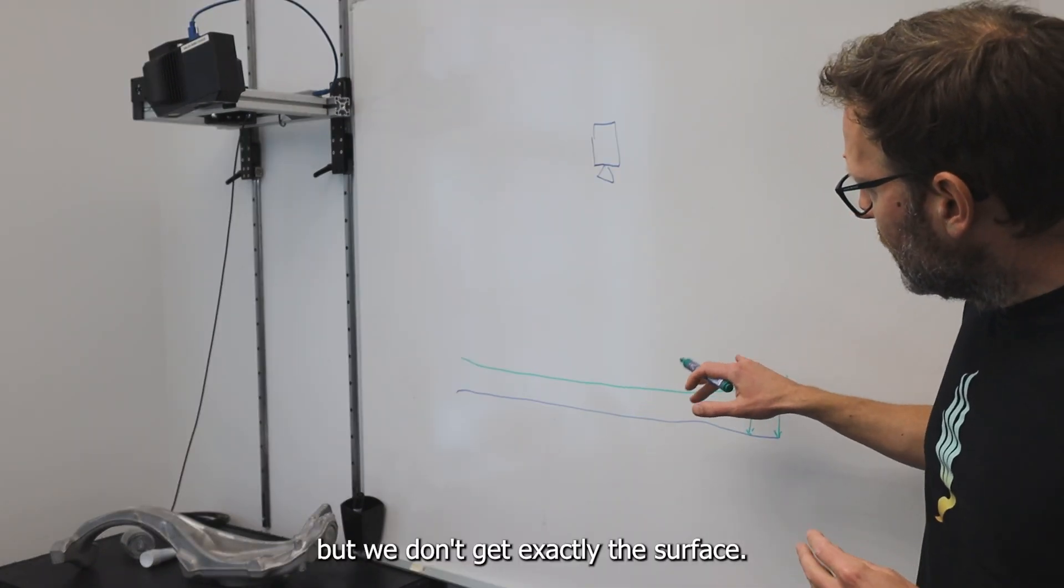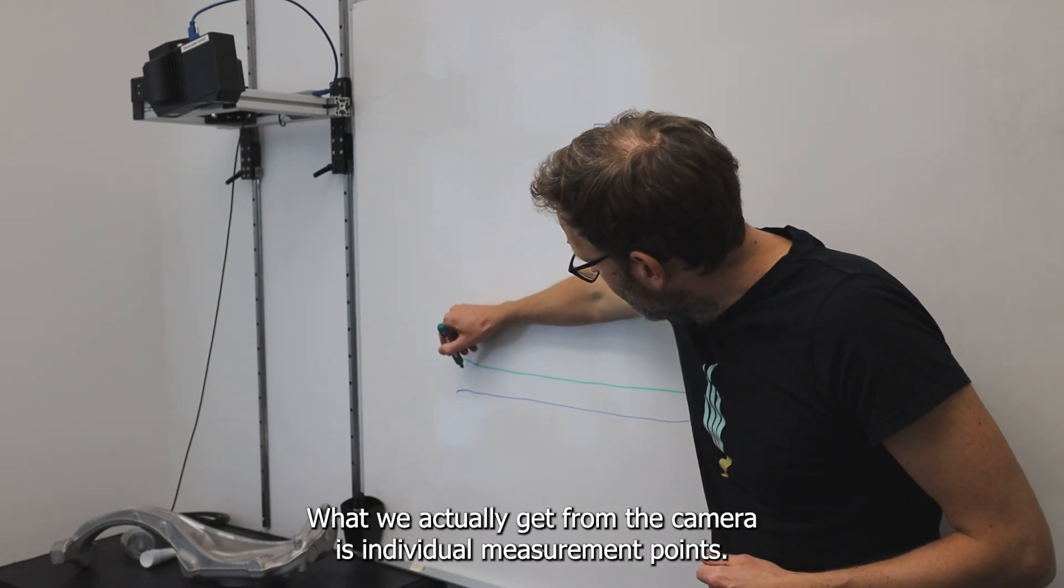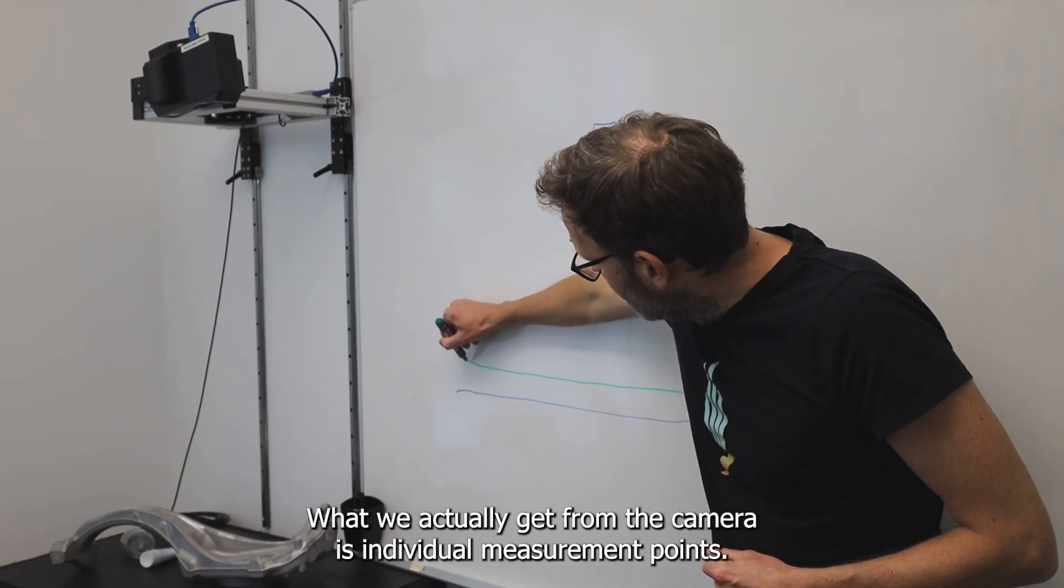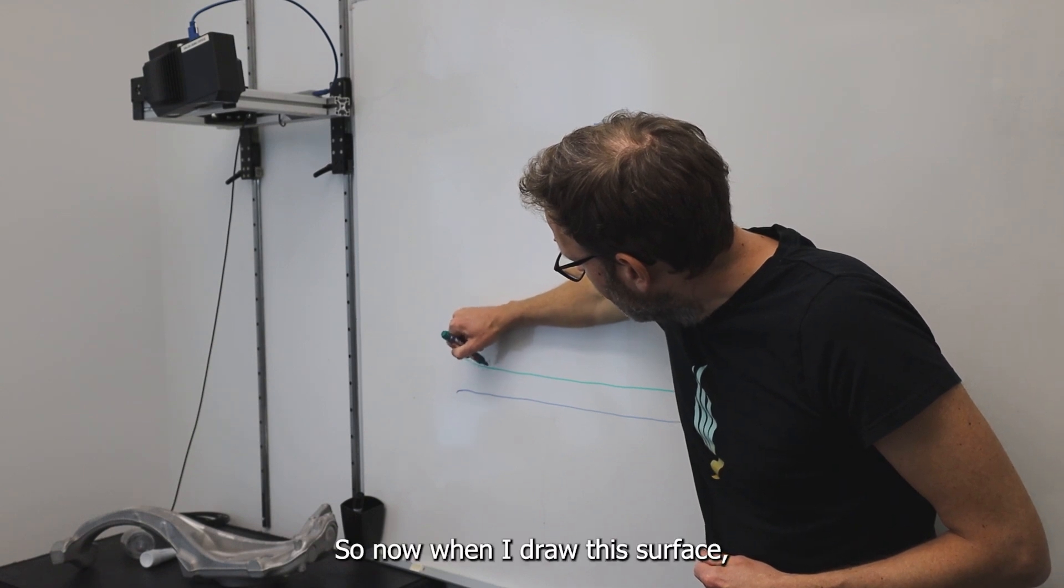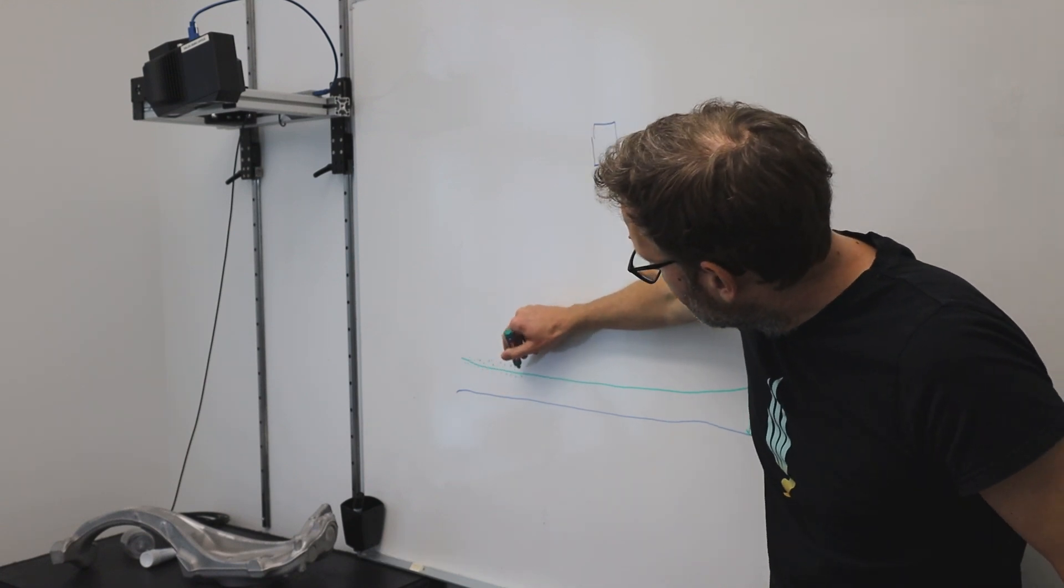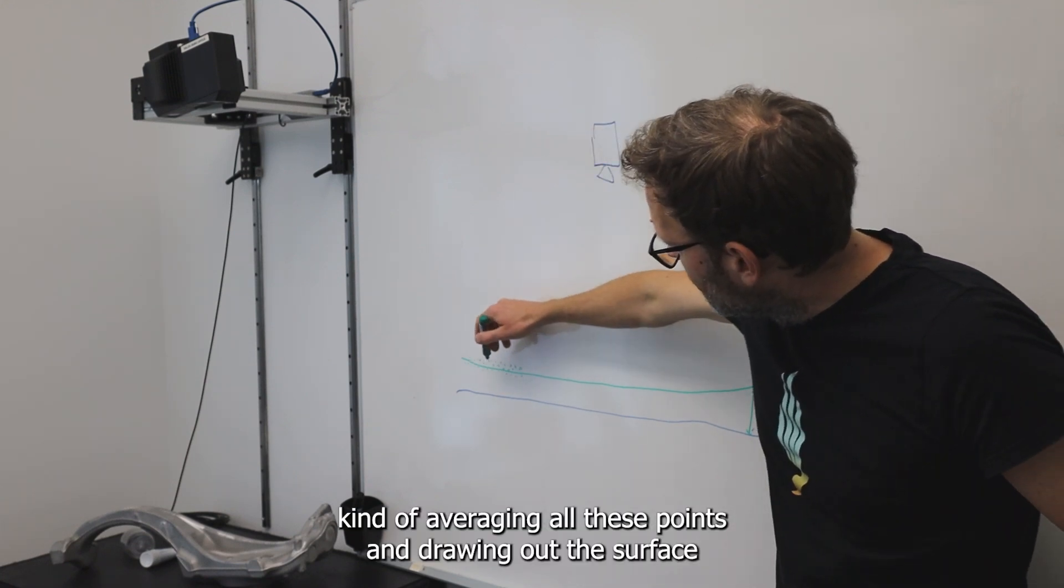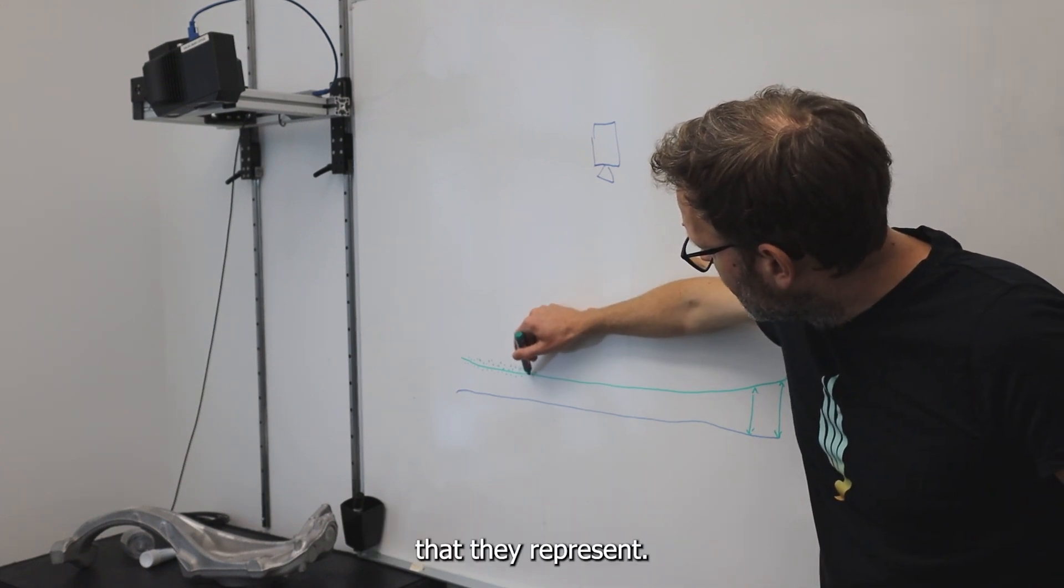But we don't get exactly a surface. What we actually get from the camera is individual measurement points. So now when I draw this surface, what I'm actually doing is averaging all these points and drawing out the surface that they represent.